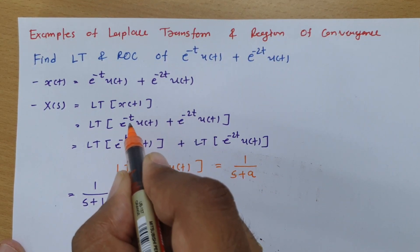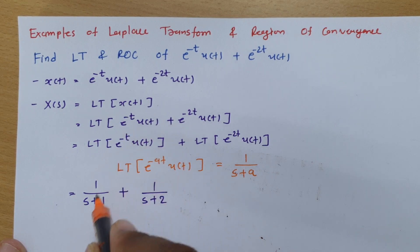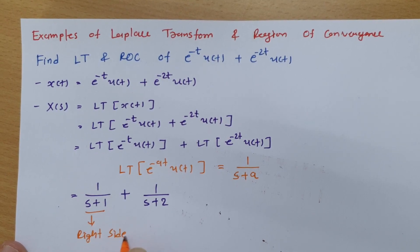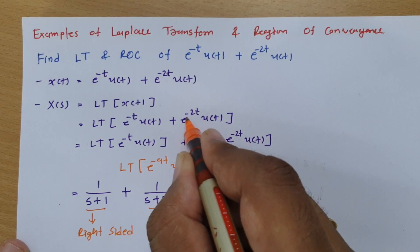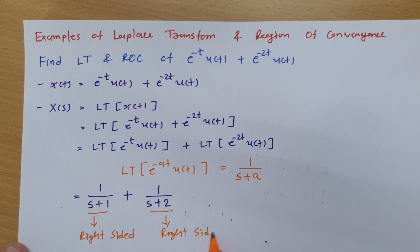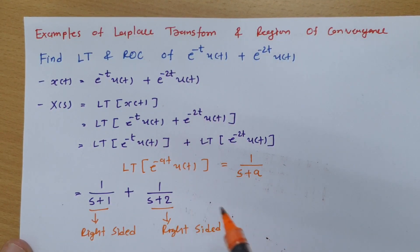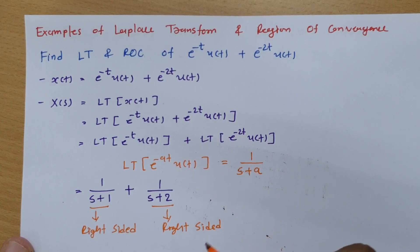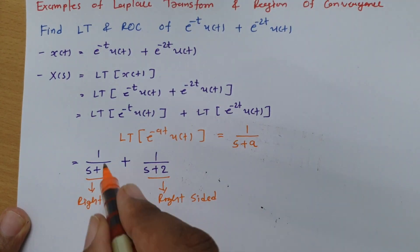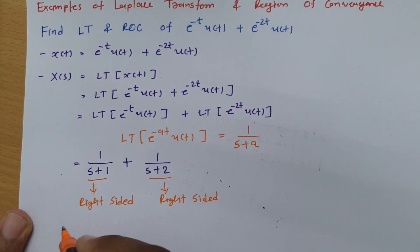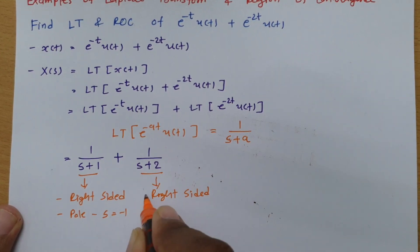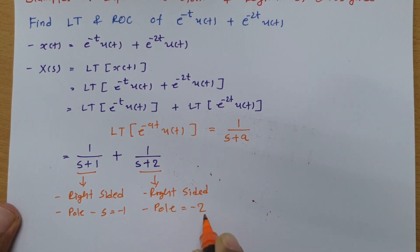The term e^(-t)u(t) is a right-sided signal, and e^(-2t)u(t) is also a right-sided signal — signals with u(t) are right-sided. The pole for the first signal is at s = -1, and the pole for the second signal is at s = -2.